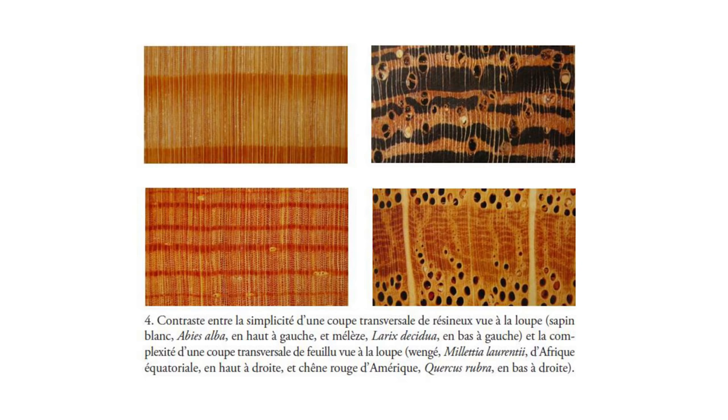Chaque essence a ses particularités anatomiques de structure. Ici, il y a un sapin blanc ou sapin pectiné. On appelle ça un résineux, mais il a de la résine ailleurs que dans le bois — il y a de la résine seulement dans l'écorce ou lorsqu'il y a des blessures. Sinon, le sapin blanc n'a pas de canaux résinifères dans le bois. Donc pour le travailler, c'est intéressant : il n'y a pas de poche de résine dans les planches, dans les poutres, contrairement à l'épicéa ou au mélèze.